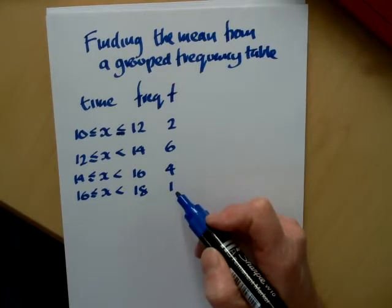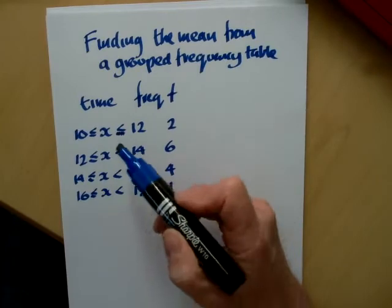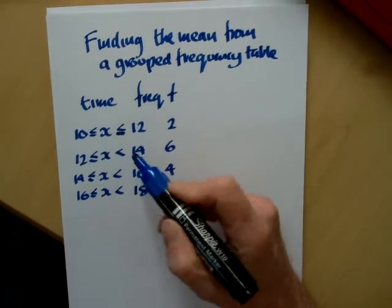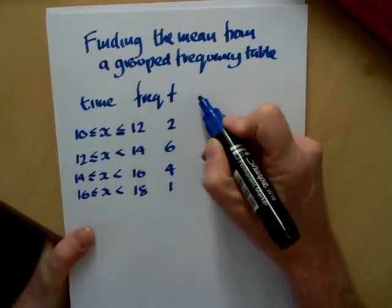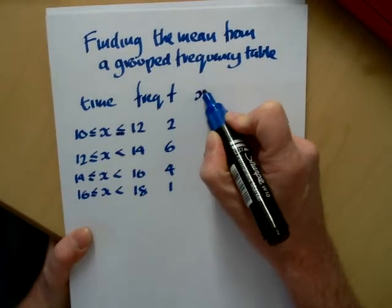Now to calculate the mean we're going to have to make an estimate for the times in each interval. And the estimate we take is the midpoint, and we call the midpoint x.